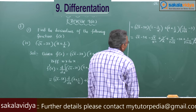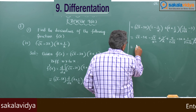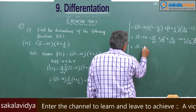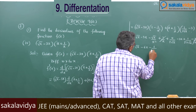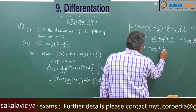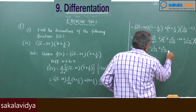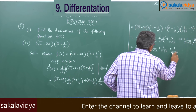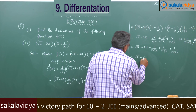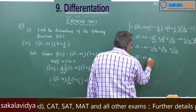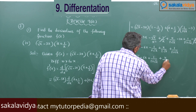After cancellation, we have root x minus 6x minus 1 by x root x, plus x by 2 root x plus 1 by 2x root x.